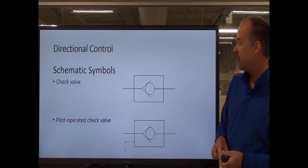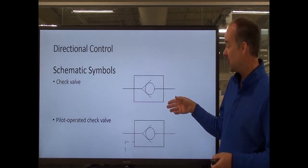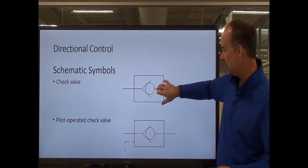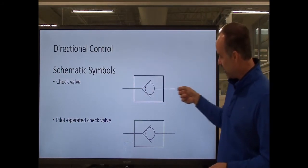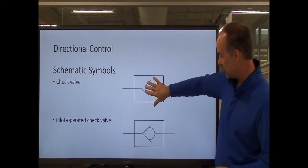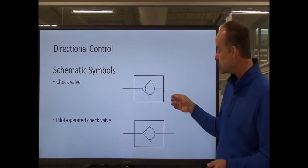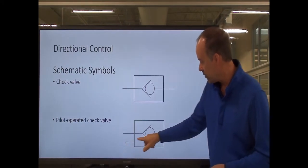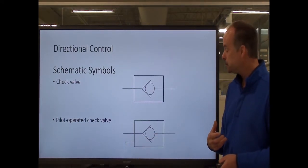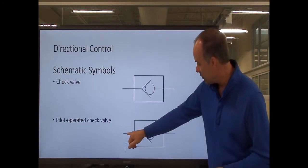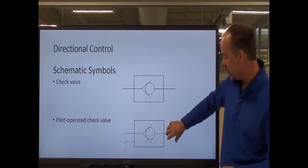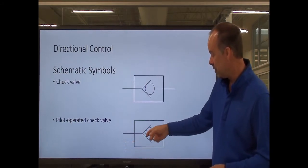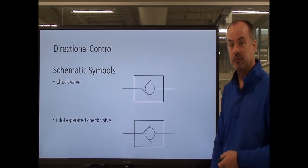The schematic symbol for a check valve is a very good representation of what's actually going on inside. This check valve will allow flow in one direction — pressure pushes the ball off the seat and allows fluid to flow that way. Fluid flowing back the other way will push the ball into the seat and seal it off. Down here I have a pilot-operated check valve — the dashed line coming out of the symbol tells me it's pilot-operated. The same rules apply, but if I have pilot pressure, it forces the ball off the seat and allows fluid to flow in that direction.